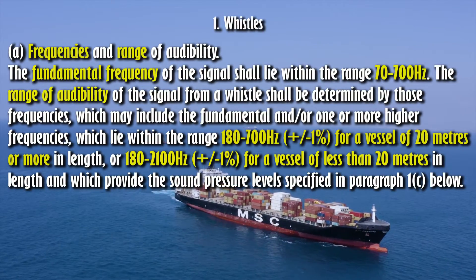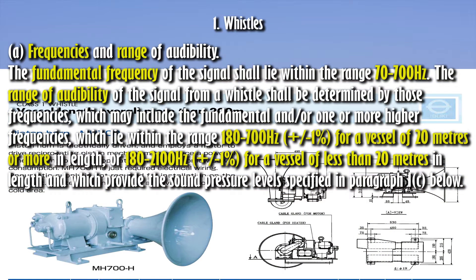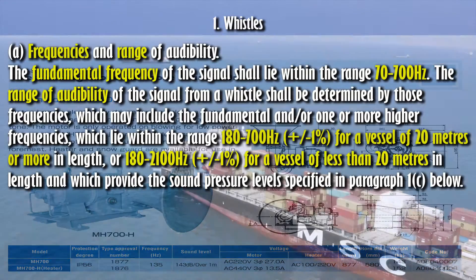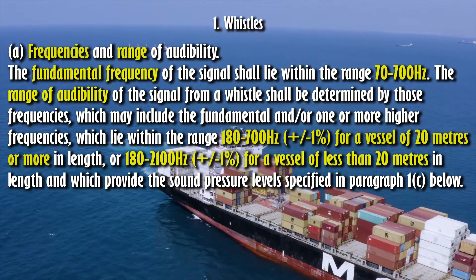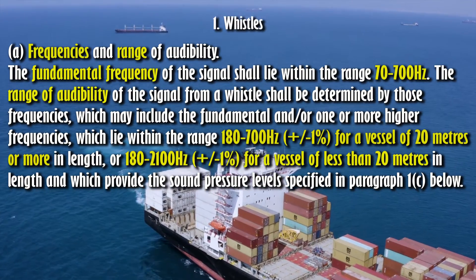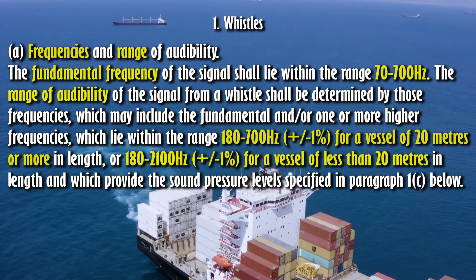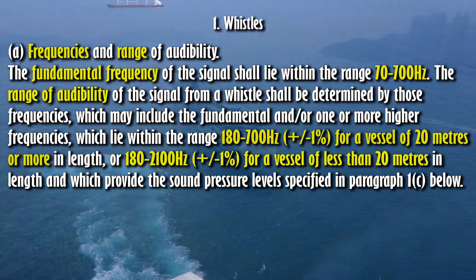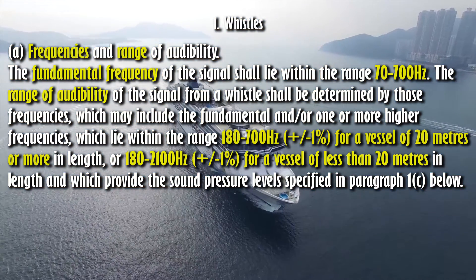A. Frequencies and range of audibility. The fundamental frequency of the signal shall lie within the range 70 to 700 hertz. The range of audibility shall be determined by those frequencies, which may include the fundamental and/or one or more higher frequencies, within the range 180 to 700 hertz plus or minus one percent for a vessel of 20 meters or more in length, or 180 to 2100 hertz plus or minus one percent for a vessel of less than 20 meters in length, which provide the sound pressure levels specified in paragraph 1(c).